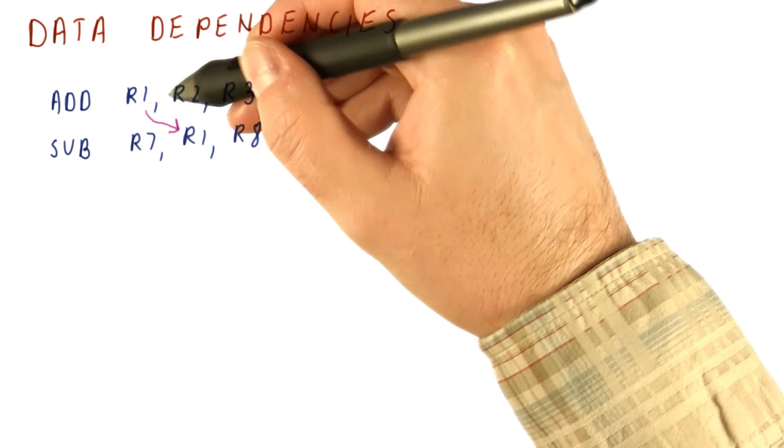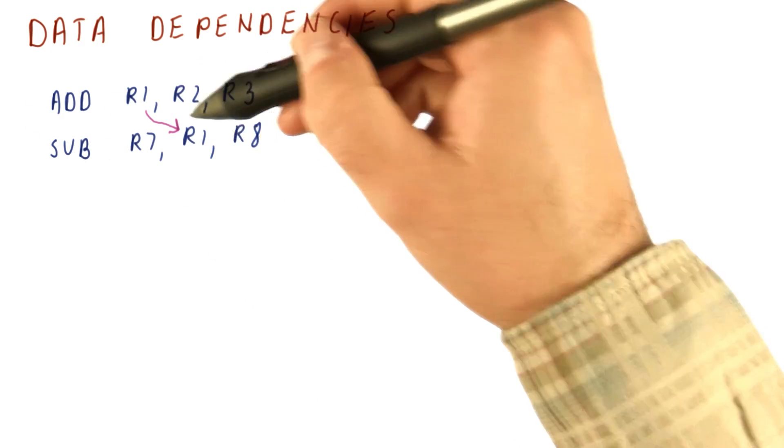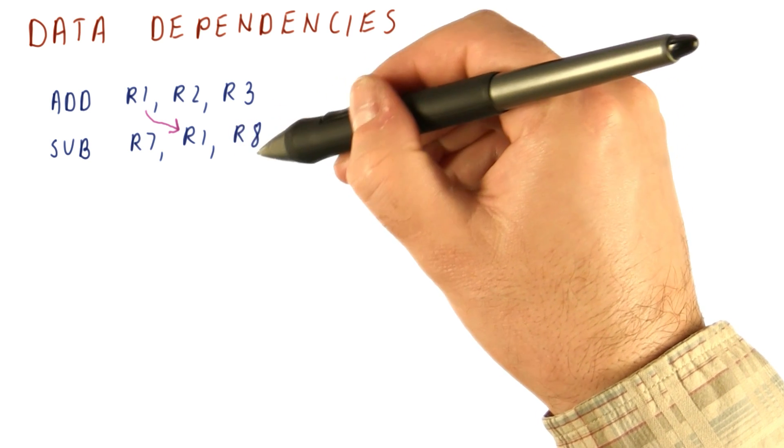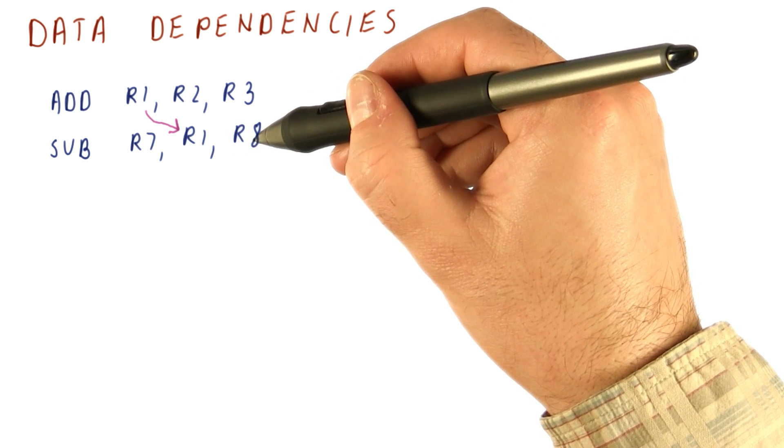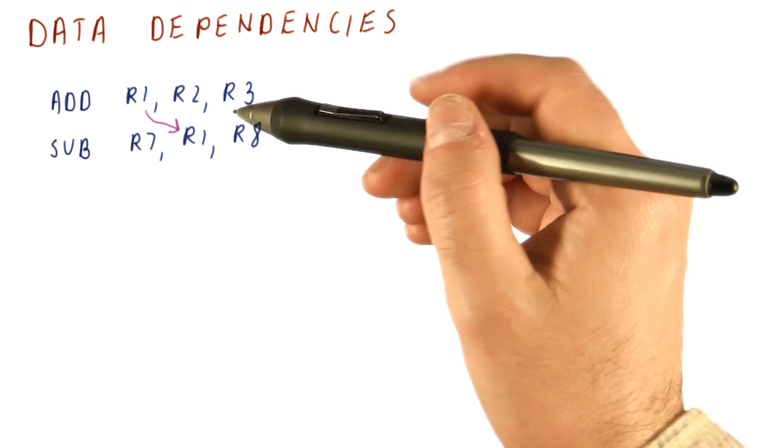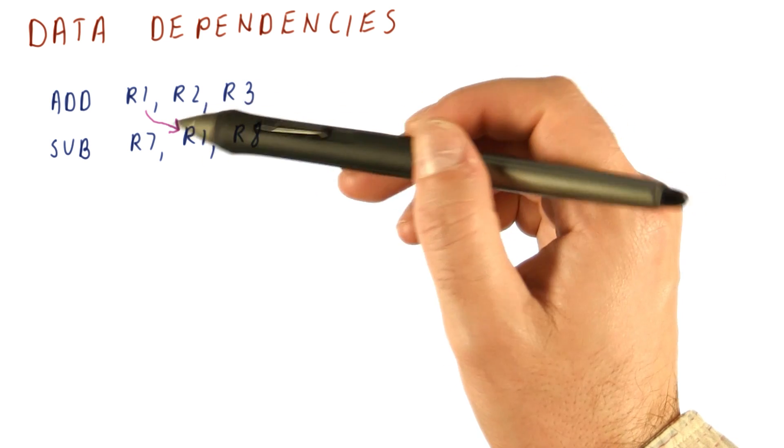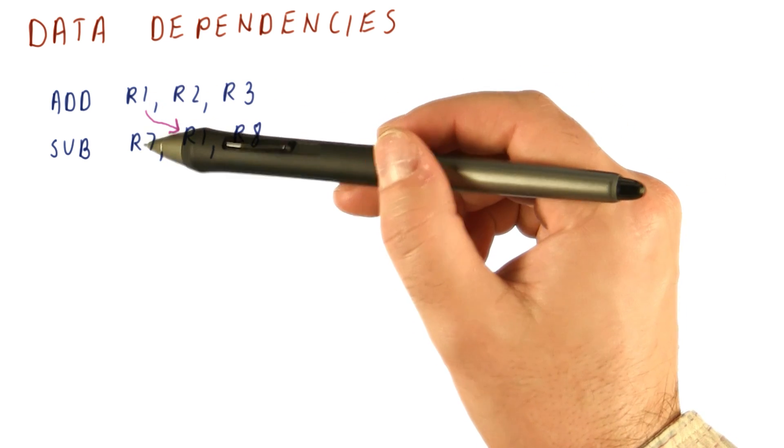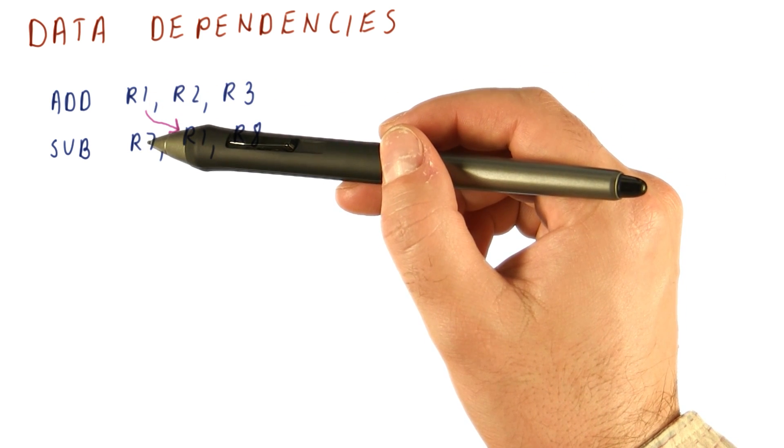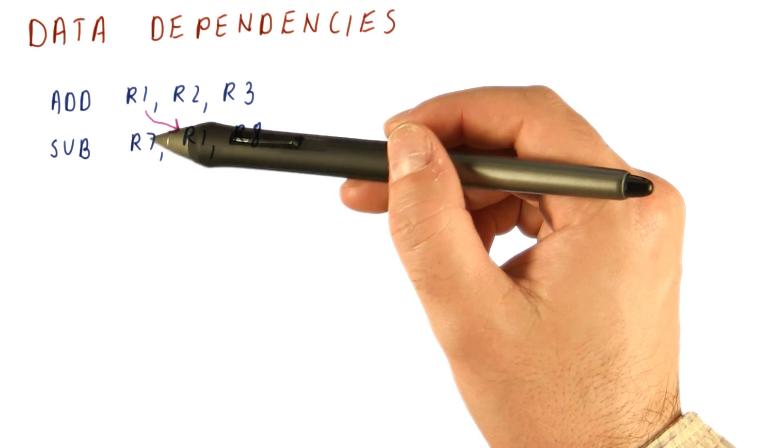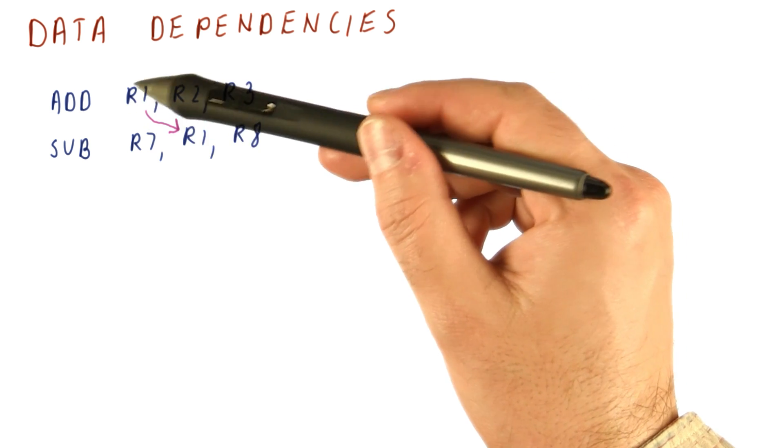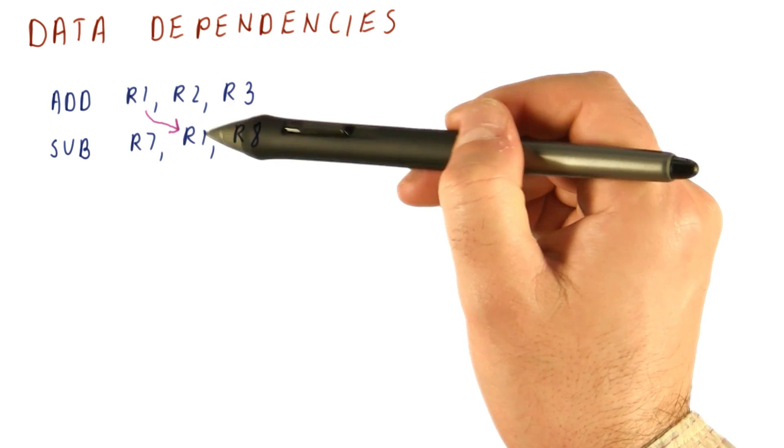In fact, we can have this data dependence and there could be another instruction that produces R8 that the subtract also depends on. When we have a data dependence, that means that we cannot just do these instructions like they were loads of laundry that have nothing to do with each other. We have to have the add produce R1 before the subtract can use it.